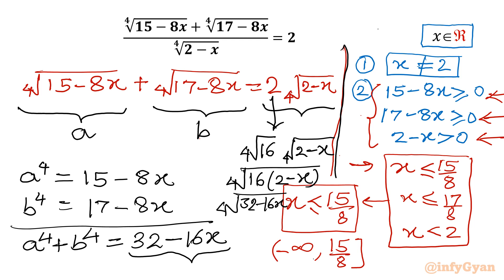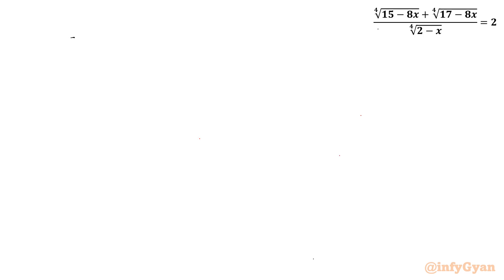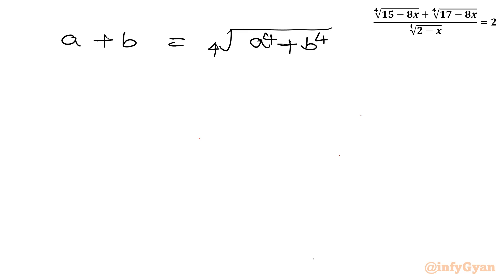So we have: a plus b equals 4th root of (a to the power 4 plus b to the power 4). Now consider taking the 4th power to both sides. This will become: (a plus b) to the power 4 equals a to the power 4 plus b to the power 4.